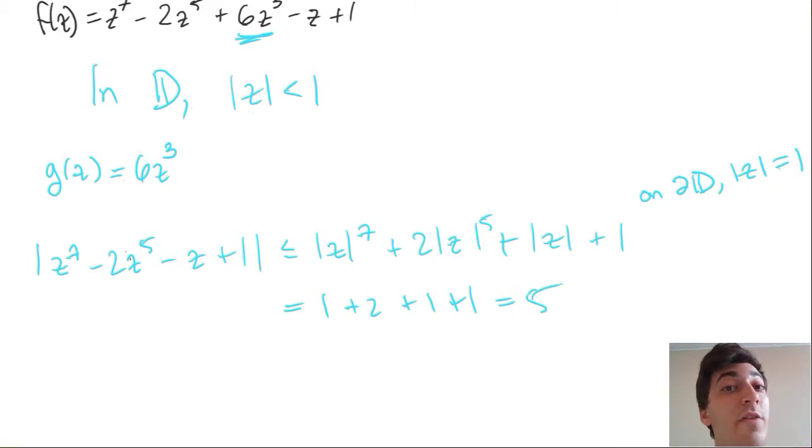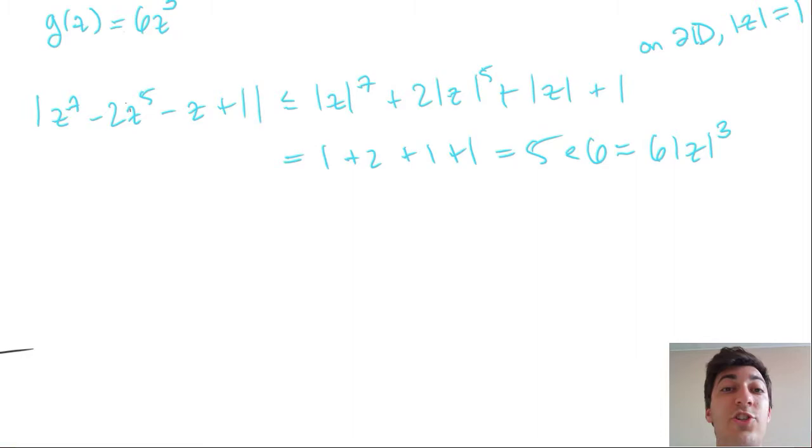But again, we're working on the boundary of the disk. So 5 is less than 6, as we know. But 6 on the boundary of the disk is 6 times the modulus of z³, which again is the value of the modulus of g on the boundary of the disk. So we've shown that our functions satisfy Rouche's theorem.